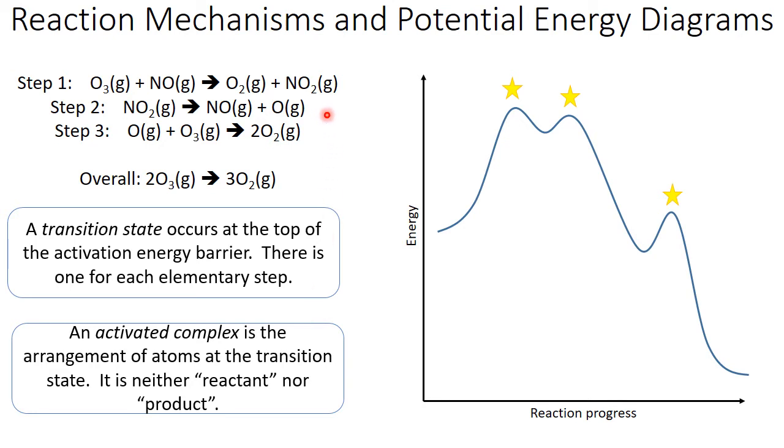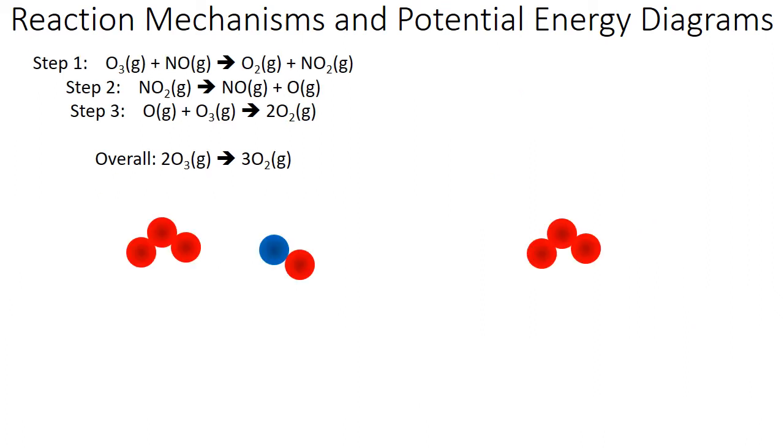Let's take a look at our reaction mechanism and look at it at a particulate level. What's happening with these atoms? We're going to begin with a molecule of ozone that's going to now interact with a molecule of NO. An oxygen atom is going to transfer over to the NO, making O2 and NO2.